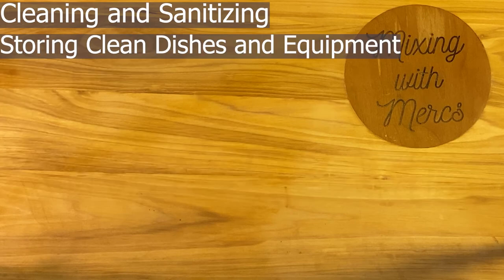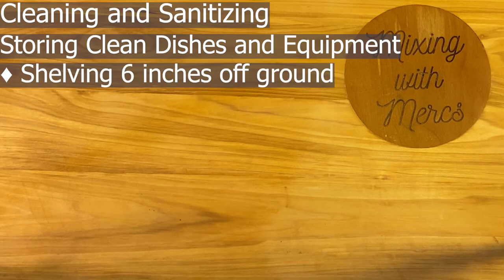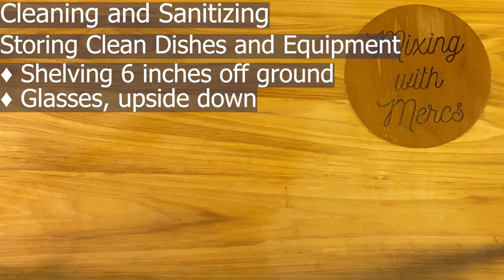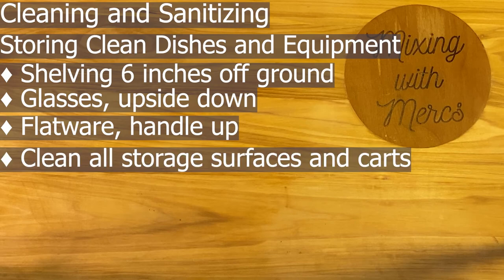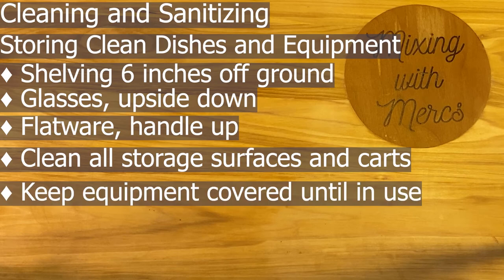Once your dishes are clean, there are a few storage guidelines. Any shelving used for dishes must be six inches off the ground to prevent pest contamination. All glasses must be stored upside down, and flatware must be handled up so you're not touching what customers will eat off of. Carts used for dishes need to be cleaned regularly to avoid contaminating clean items. All equipment needs to be covered until it's being used, so dust doesn't build up.